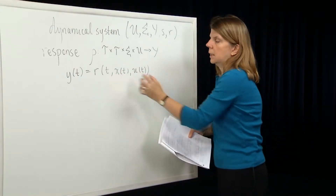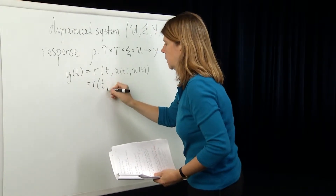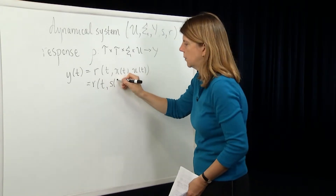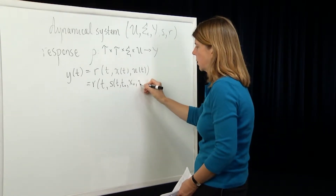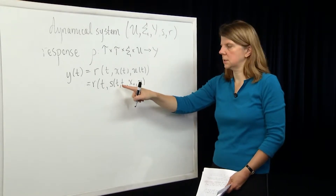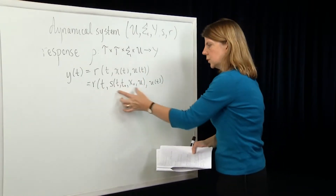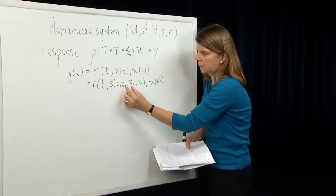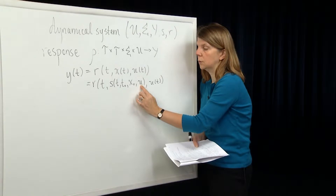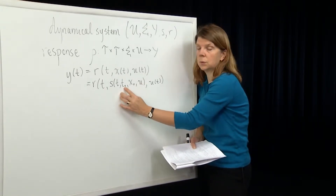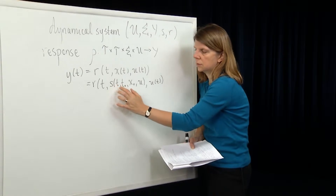We know that the state at time t can be represented in terms of the state transition function — as a function of the current time, the time at which the system started, the state at which the system started, and the input function between t0 and t. So this function contains the memory of having started at some initial time at that initial state and applied that input u, defined between t0 and t. The state transition function takes the state from its initial value at time t0 to its value at time t.